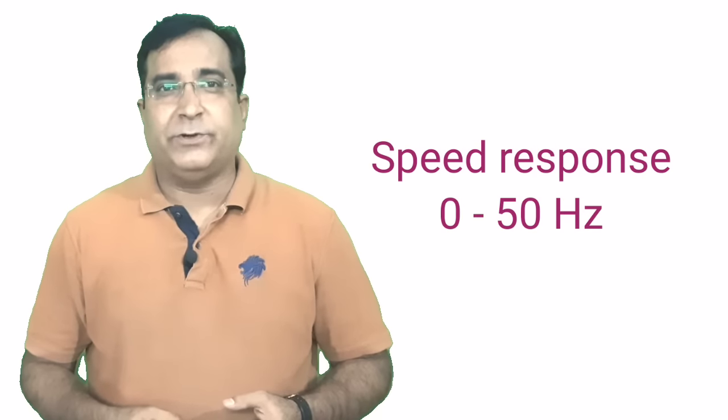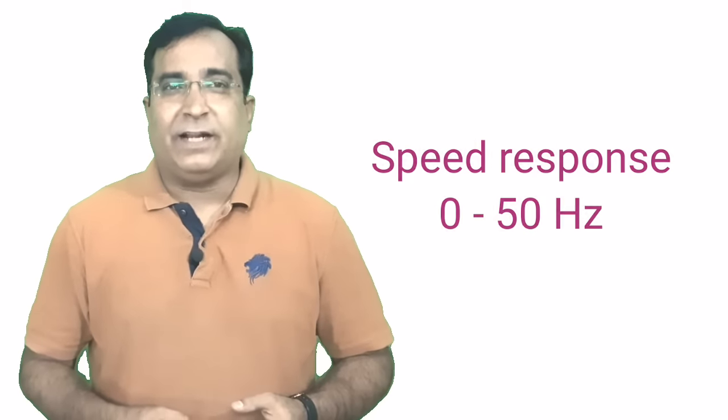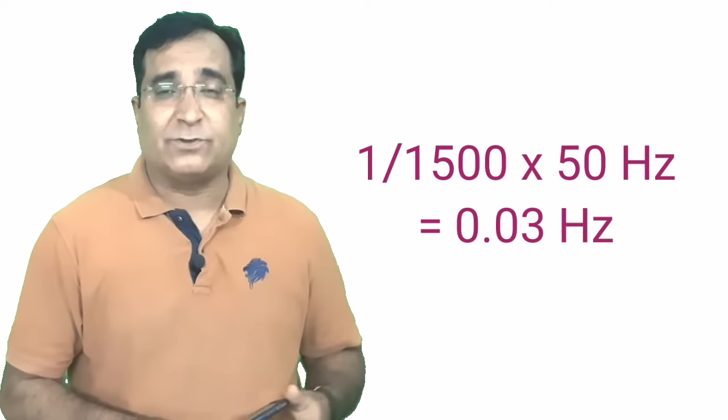Its speed response is up to 0 to 50 hertz due to this speed encoder, and the speed control range is up to 1 is to 1500. That means you can control up to 0.03 hertz - highest in any control method available. With closed loop control, you can also drive the motor in torque control mode.